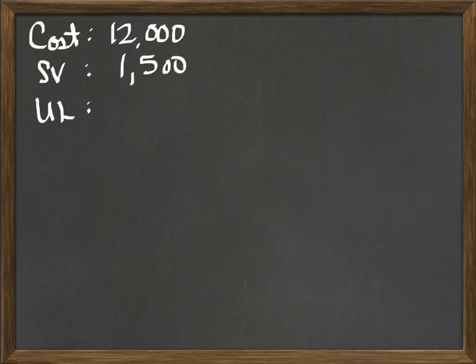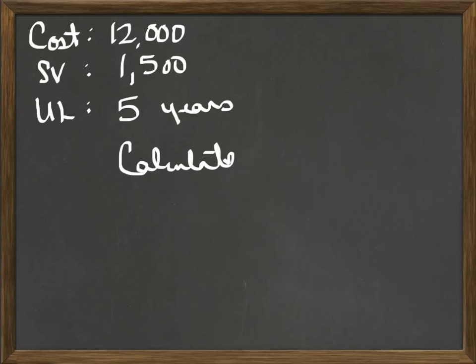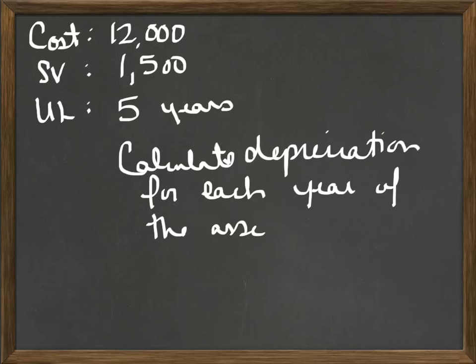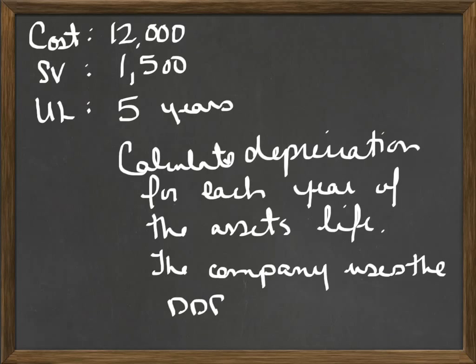In order to do double declining, we need the same information. We always need to know the cost, salvage value, and the useful life. The cost was $12,000. We had a salvage value of $1,500. And for double declining, we need to know the useful life in years — so we've got the useful life at five years.